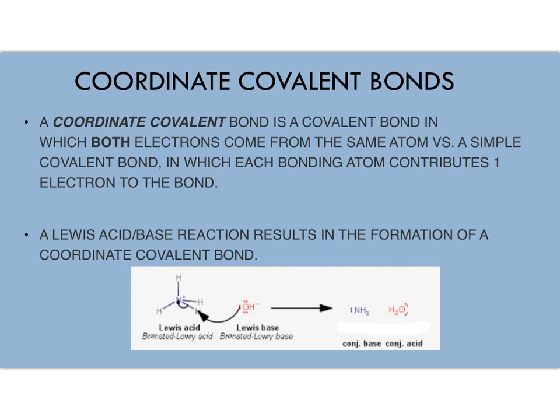First, let's introduce what we mean by coordinate covalent bond. A coordinate covalent bond is a covalent bond where electrons are shared between two atoms, but in a coordinate covalent bond both of the electrons that make up the bond come from the same atom. If you remember, a regular covalent bond has each of the two bonding atoms contribute one electron.